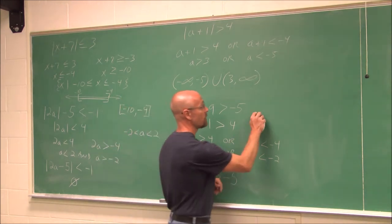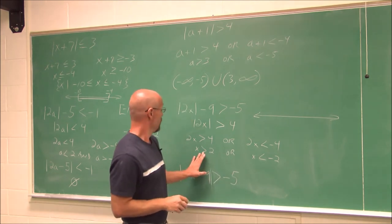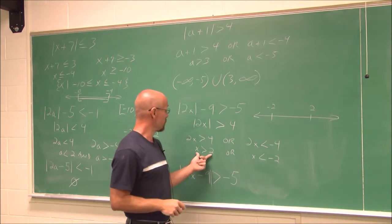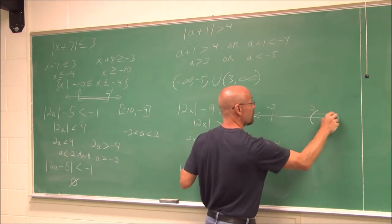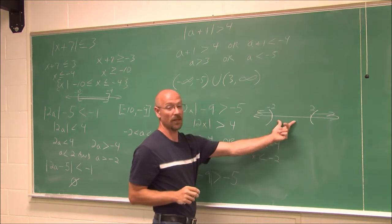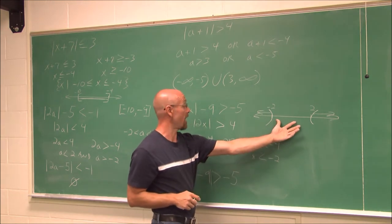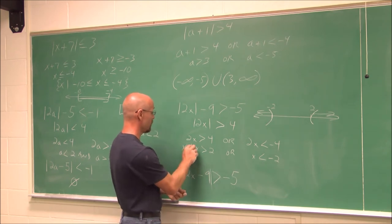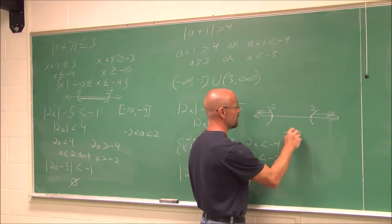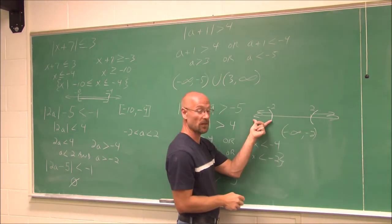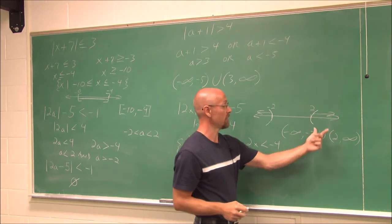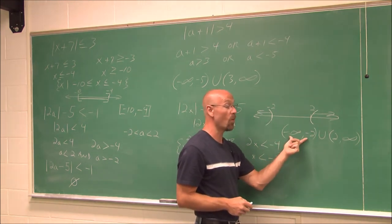If I graph this, we have negative 2 and positive 2. x is greater than 2, so that would be any value to the right of 2. x is less than negative 2, so any value to the left. We can see they do not intersect. In interval notation, from negative infinity to negative 2 is one piece, and we use the union symbol, then 2 to infinity for the other piece — two separate pieces, what solves one or the other.